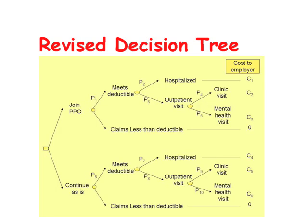Let's look at how the concerns of the employers led to revisions of the decision tree. In this slide, we have introduced a new event called 'meeting the deductible.' We also show hospitalization occurring at the probability of P2 for joining the PPO, and outpatient visit occurring with the probability of P3. The outpatient visit is also broken down in terms of clinic visits and mental health visits. We also show that employees with less than the deductible in claims have zero cost to the employer.